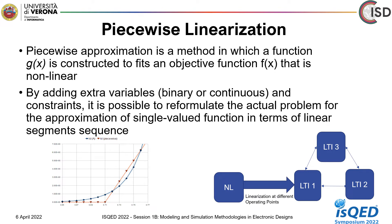Before moving into the depth of the abstraction methodology, we need to have a clear idea about piecewise linearization. Piecewise approximation is a method in which a function g(x) is constructed to fit an objective function f(x) that is non-linear. Non-linear models can be linearized at different operating points. In piecewise linearization, we can have multiple LTI (linear time invariant) systems, and we can switch between these LTI systems depending on the operating condition. For example, a diode is a non-linear device — its I-V curve shows exponential behavior, but we can approximate the diode characteristic curve as a series of linear segments.